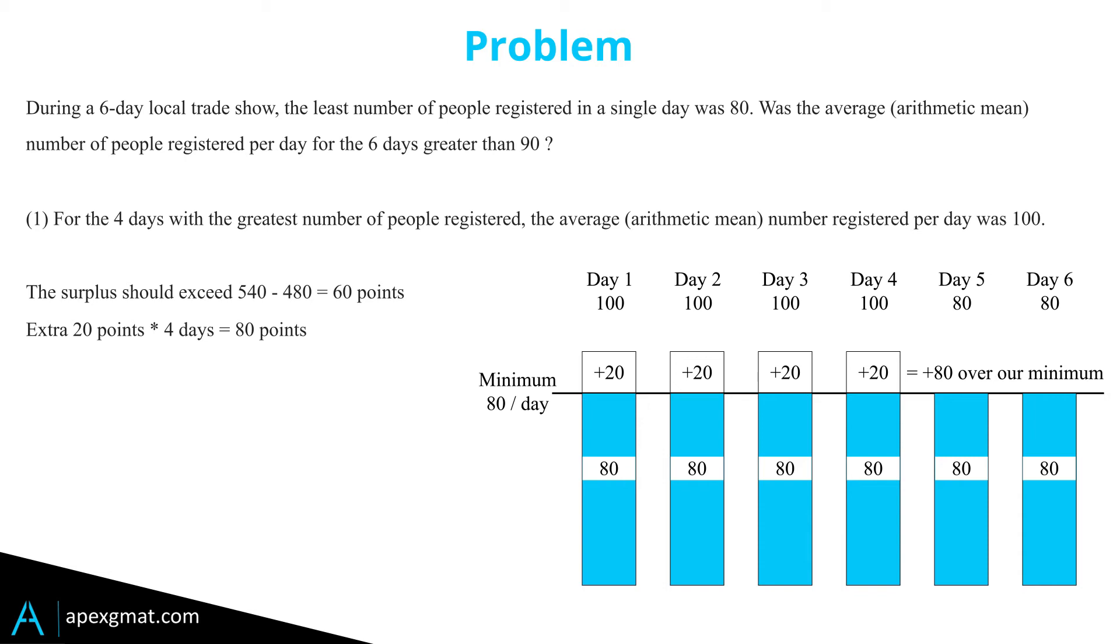Because we want to know whether we are more or less than 60 points, this knowledge that we're 80 points over tells us yes, definitively we are over that average of 90. We're over that surplus of 60 points, so statement one is sufficient.